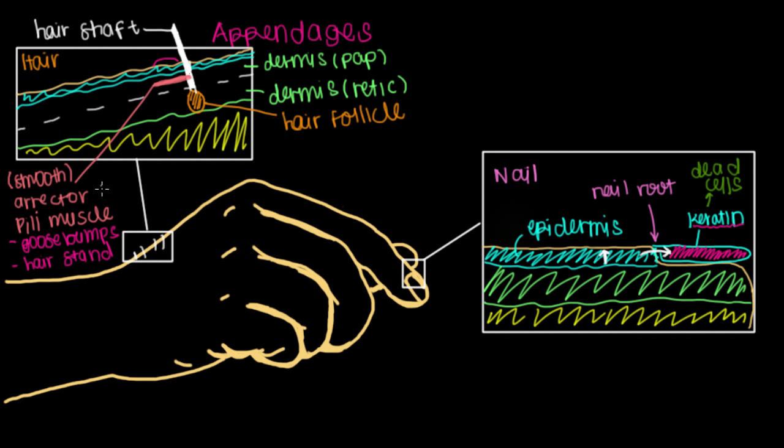So one thing you might be asking is why do we even have this erector pili muscle? What's the point of having our hair stand on end? And actually this is something that's more useful in animals than it is for us. So imagine if we're talking about a polar bear. And I'll give it my best shot at drawing a paw right here to represent a little polar bear. But we've got this polar bear right here and this guy's in the cold. So poor guy's out in the cold, okay?